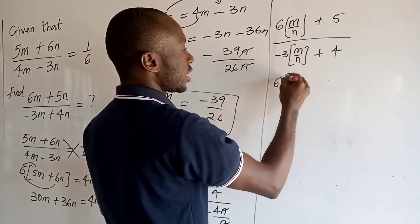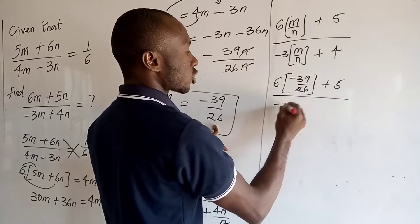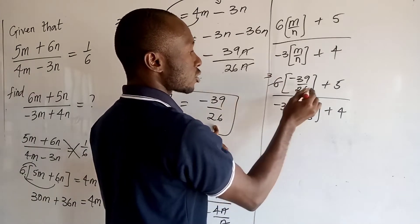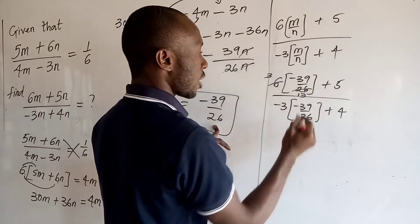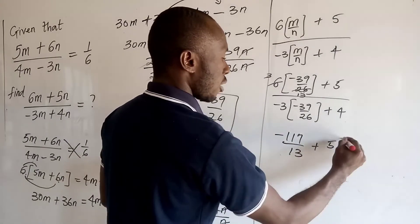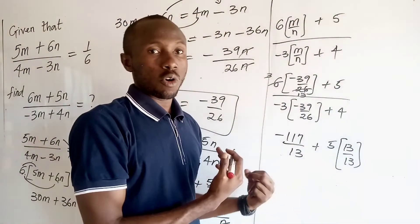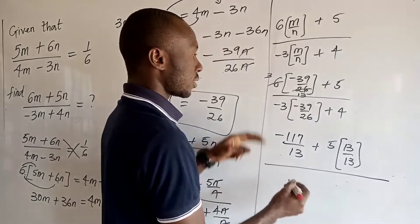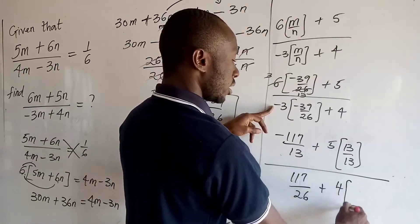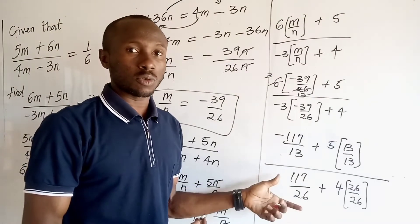So this becomes: 6 times (−39/26) plus 5, all over −3 times (−39/26) plus 4. Simplifying, 26 and 2 gives 13, and 6 divided by 2 is 3. So 3 times (−39/13) gives minus 117 upon 13 plus 5, written as 65 upon 13 so they share a common denominator. The denominator becomes 117 upon 26 plus 4 times 26 upon 26. So at this point we are progressing and we are close to our final answer.